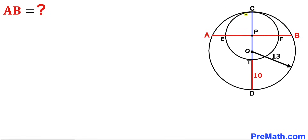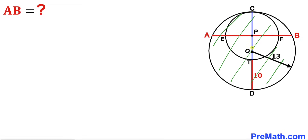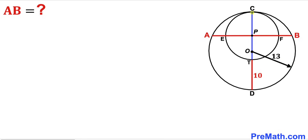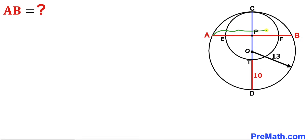Welcome to PreMath. In this video we have a smaller circle with center P fully inscribed in a larger circle with center O, as shown in the diagram, such that the radius of the larger circle is 13 units. CD is the diameter, segment TD is 10 units, and AB is a chord. Our task is to find the length of chord AB.